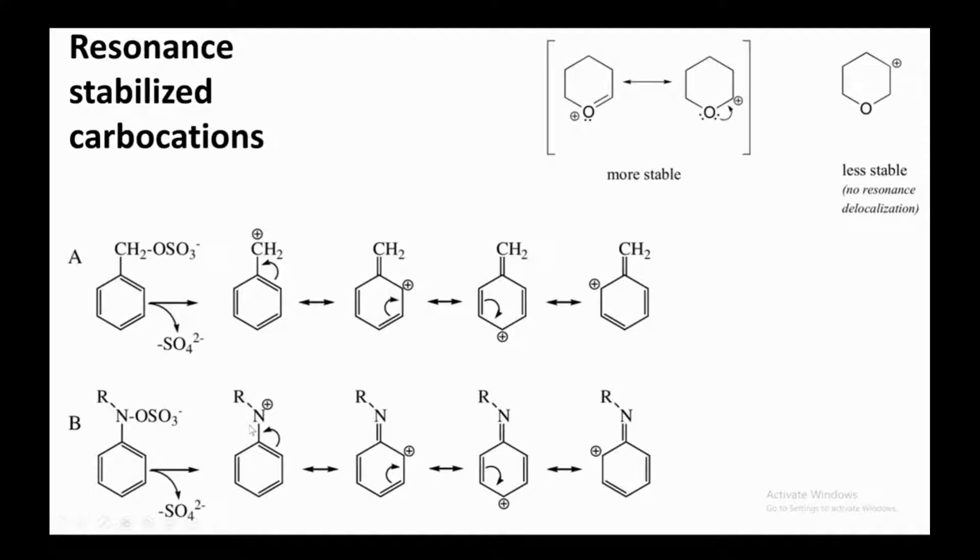The reason is nitrogen being more electronegative, hence it doesn't like positive charge. Carbon is less electronegative compared to nitrogen, so it will favor the carbon positive charge. Again, as you can see in this example, this positive charge is stabilized through resonance, and this is how you write resonance stabilization of carbocation.